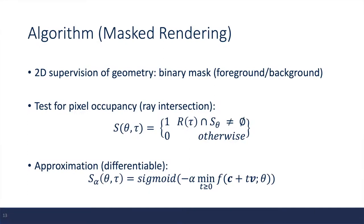So as an additional level of supervision for the geometry, they also use something called the mask rendering. In this case, they assume that for each of the input images, we also have a corresponding binary mask that has the label for foreground and background.